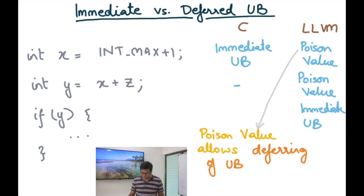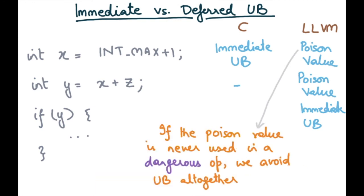And so what has really happened is that the poison value has allowed the deferring of the UB. The UB that was supposed to be triggered originally in the C program at the first statement itself has been deferred all the way to the use of the poison value in some dangerous operation. And so poison value allows deferring of UB. And if the poison value is never used in a dangerous operation, we have been able to avoid the UB altogether. And that is where the power of the poison value comes from or the advantage of the poison value comes from.